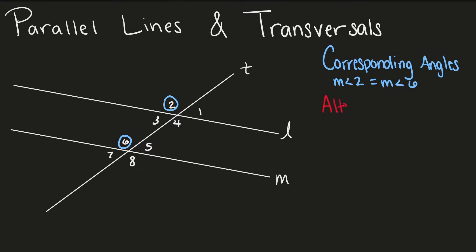Angle 3 and angle 5 are called alternate interior angles. These angles are on the interior of our parallel lines and they alternate across our transversal. Therefore, we call them alternate interior angles, and alternate interior angles are congruent.